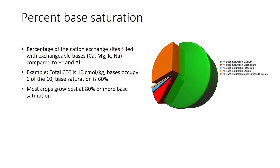Exchange sites may be filled by members of two groups of cations. One group consists of hydrogen and aluminum, which are not plant nutrients at all — their primary contribution is to acidify the soil. The other cations are called exchangeable bases and include elements such as calcium, magnesium, potassium, and sodium. Except for sodium, the bases are plant nutrients. The percentage of the cation exchange sites filled with exchangeable bases is called the base saturation. It expresses how much of a soil's potential fertility (the CEC) holds exchangeable bases. For example, if the total CEC of a soil is 10 centimoles per kilogram and bases occupy 6 of the 10, then the base saturation percentage is 60%. Most crops grow best at a base saturation of 80% or more. Some trees that grow on infertile soils do well at a base saturation of about 50%.